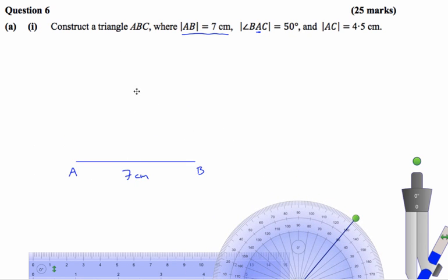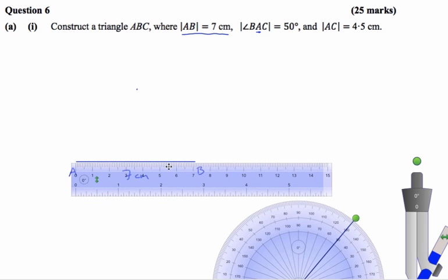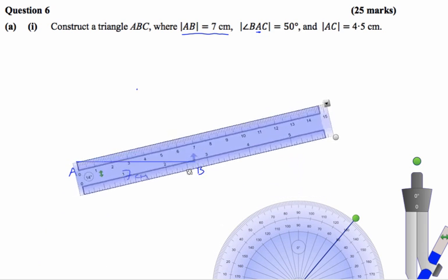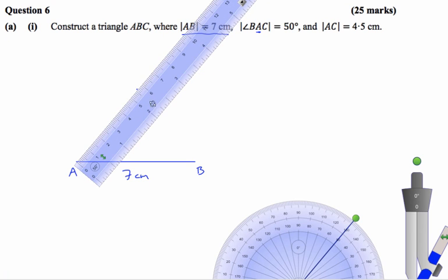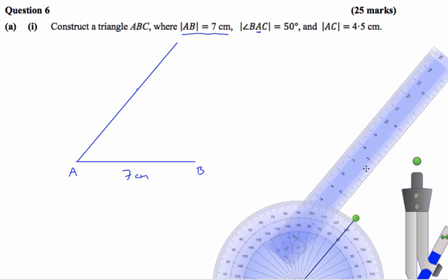Then I'm going to draw a line out through that point from A. I'll just draw the line out as far as I want.